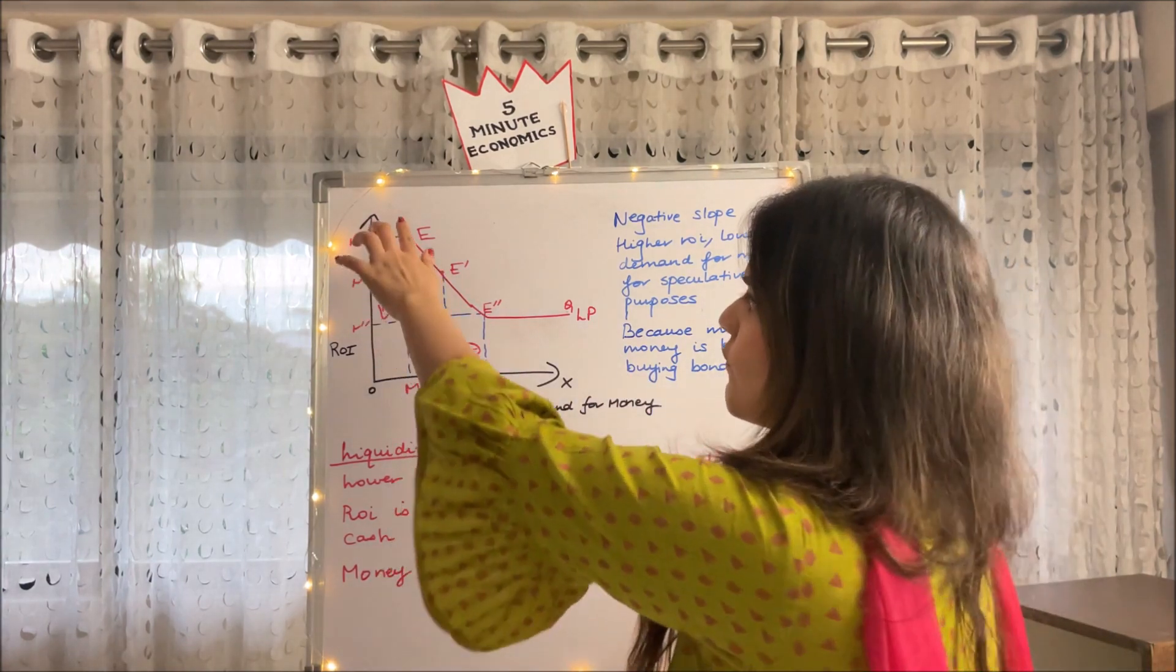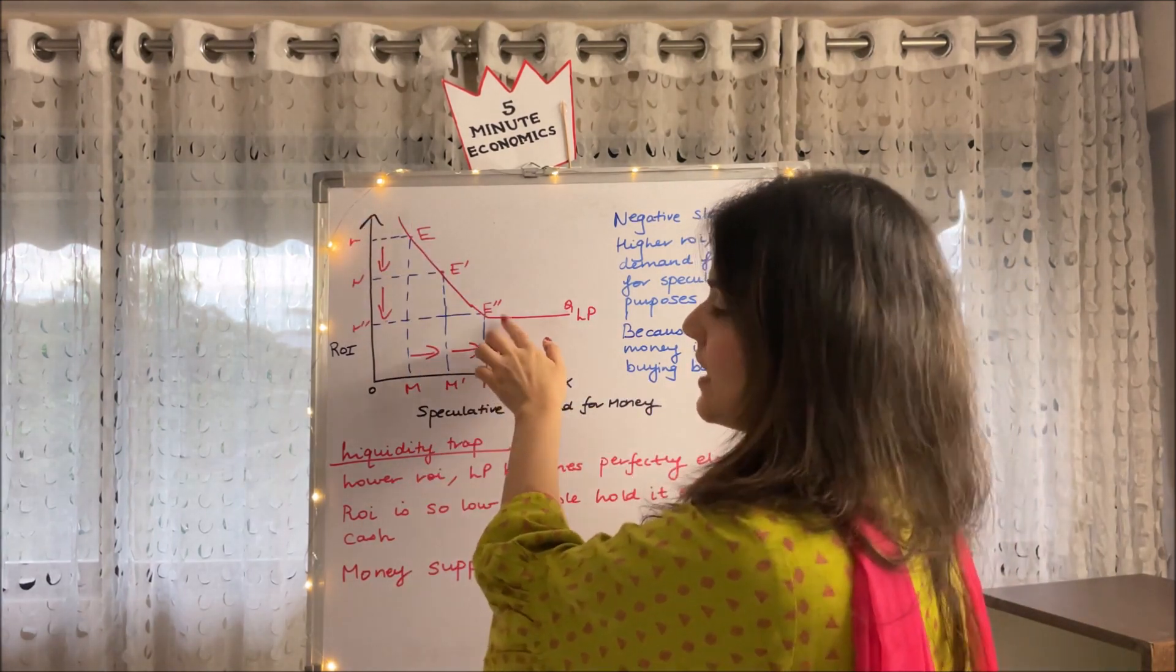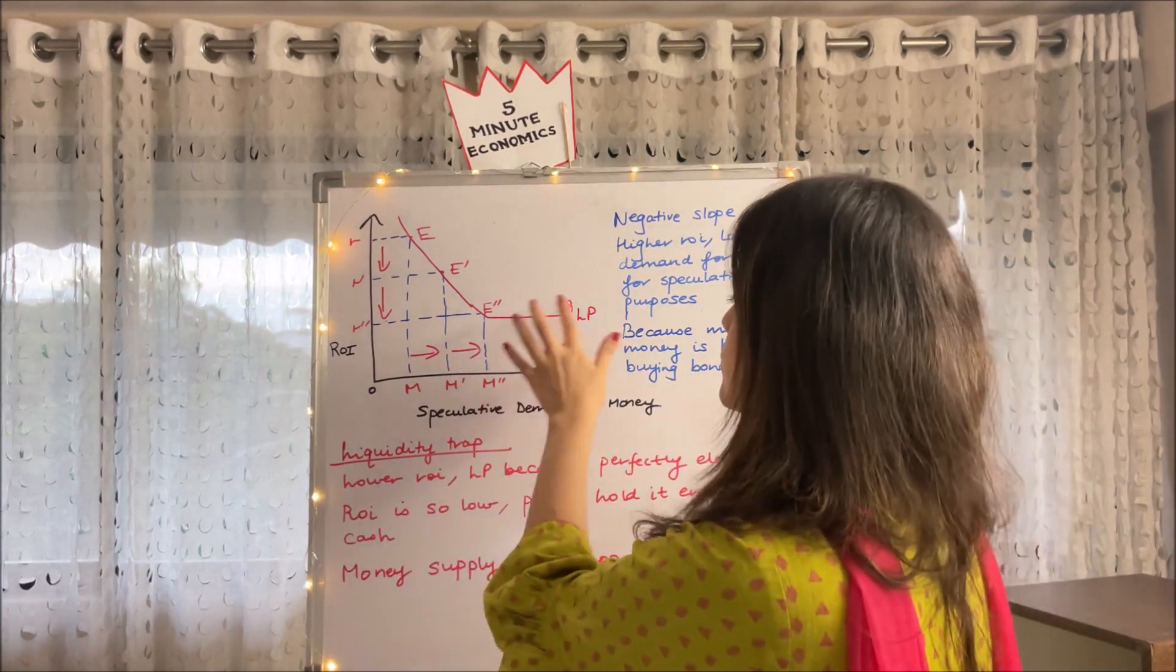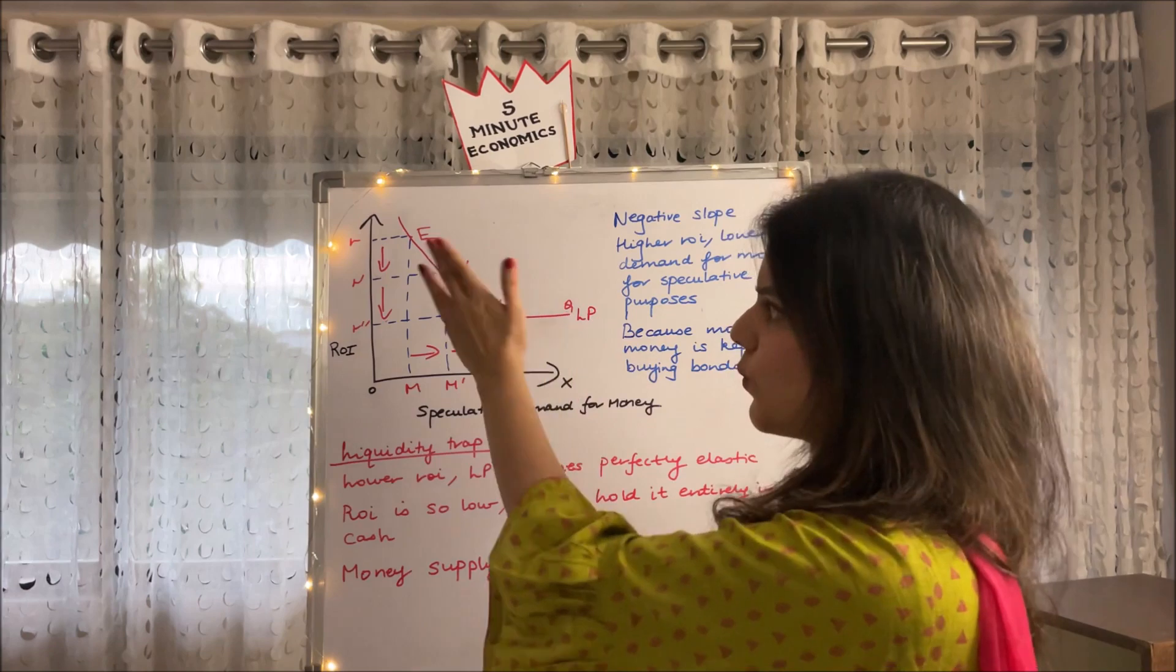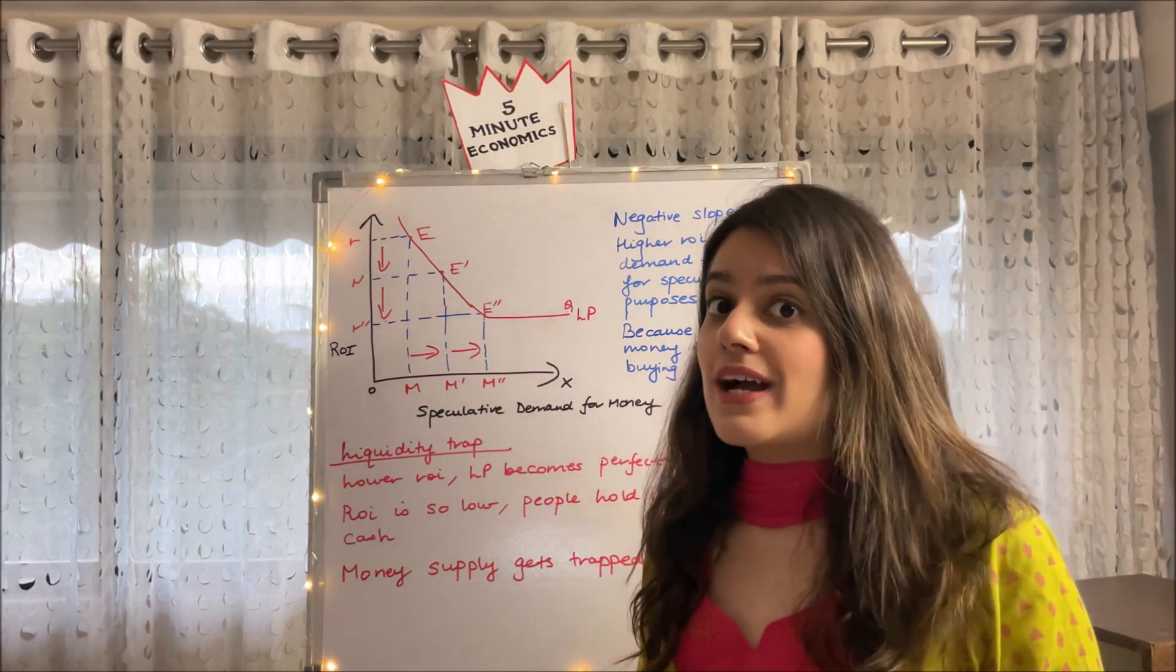Now guys, if you notice from here we are falling till E double dash, but from E double dash to point Q, I have labeled it like that, there is a straight line. Why isn't the curve falling? Why? Think about it.